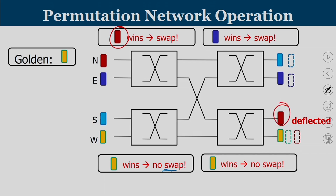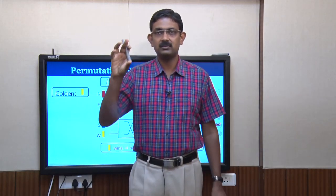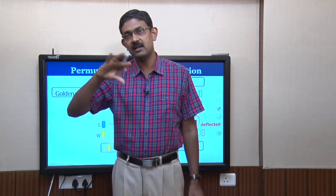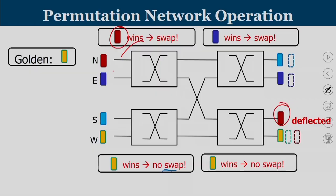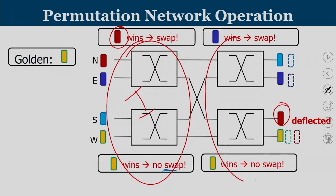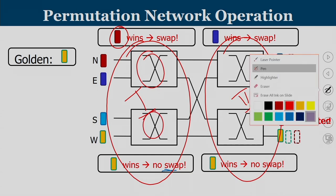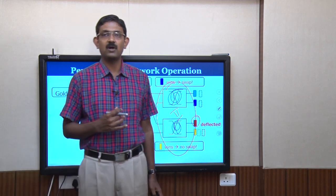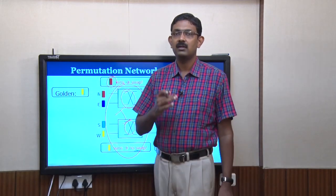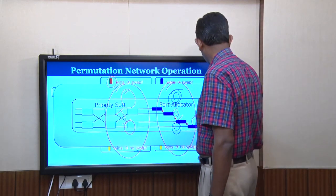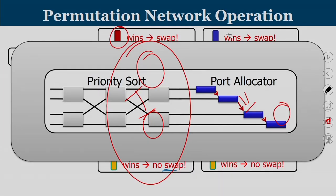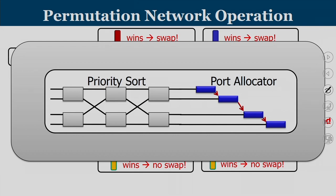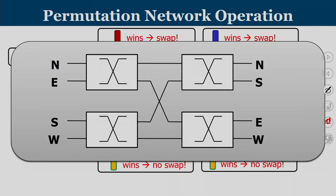The permutation deflection network consists of two permuter units at stage 1 working in parallel, followed by two permuter units at stage 2 also working in parallel. Both units at stage 1 work in parallel; similarly both at stage 2 work in parallel. Rather than sequential port allocation, we now have parallel port allocation. This parallel port allocation works because we are not looking for a total order of flits — we are only looking for a golden flit and the rest. The priority sorting and port allocator are replaced by the permutation deflection network.